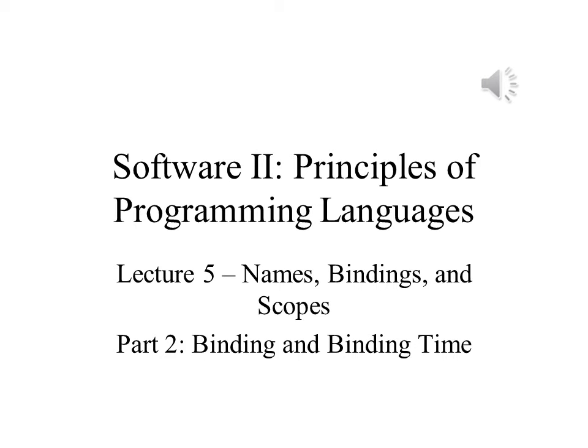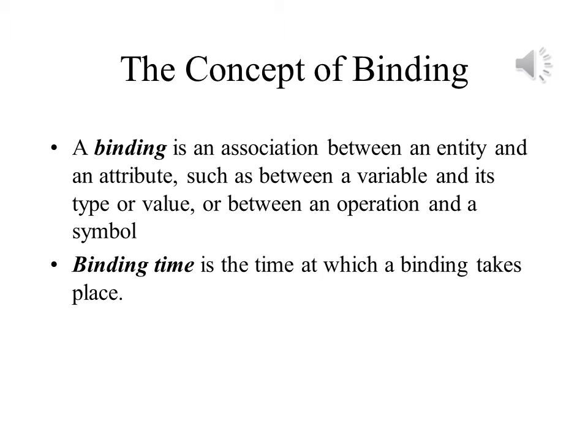In Part 2 of Lecture 5, we will discuss Binding and Binding Time. Binding refers to the association of a particular property or attribute to a particular feature or entity of a programming language. This could include binding a data type or memory address to a variable, or an operation to a symbol in the language. There are different types of bindings that can occur in a program.